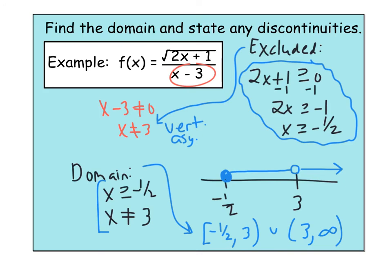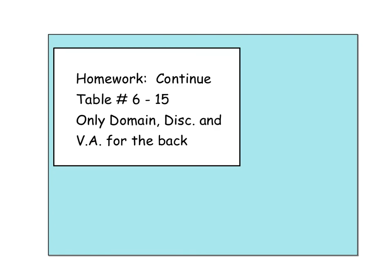For practice, look at numbers 6 through 15 on that table. Numbers 6, 7, and 8 are radical functions, so we should be able to complete everything except symmetry. When you get to the back — the rational functions — we are only doing domain, discontinuities, and vertical asymptotes at this time. We'll talk about all the other properties later on.